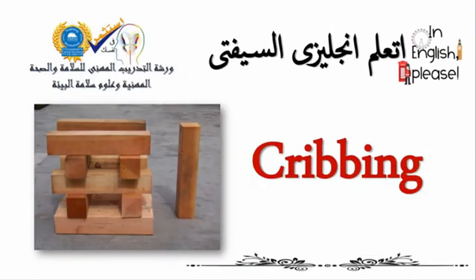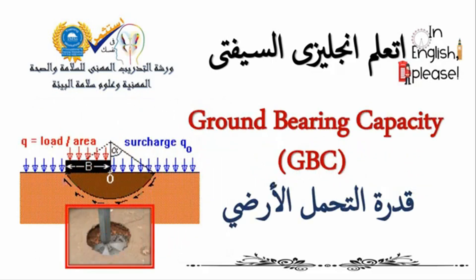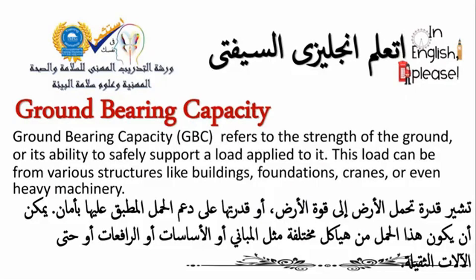Cribbing: materials used to distribute crane loads. Ground-bearing capacity (GBC) refers to the strength of the ground, or its ability to safely support a load applied to it.